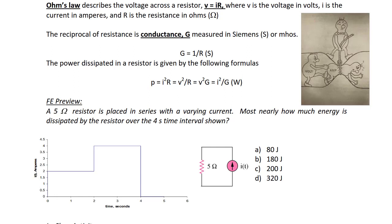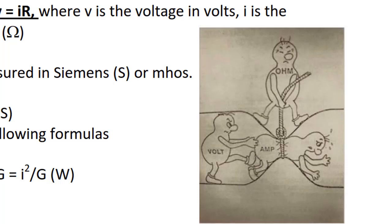The reciprocal of resistance is conductance G, measured in Siemens or mhos, where G equals 1 over R. The power dissipated in a resistor is given by: P equals I squared R, or V squared over R, or V squared G, or I squared over G. All of these formulas follow from P equals V times I. Resistance restricts the flow of current — the tighter the resistance, the higher the voltage drop and the lower the current.